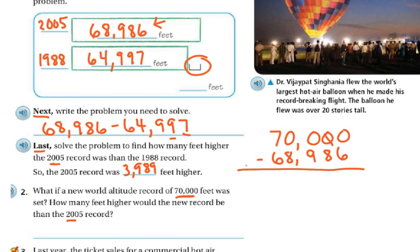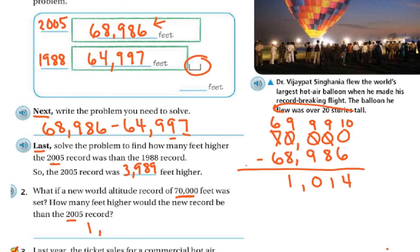I can't take 0 from 6, so I need to go next door. There's nothing to regroup there, or there, so I have to go all the way over and take a 10,000. That knocks all the intermediate places down to 9, and this last one becomes a 10. So 10 minus 6 is 4, 9 minus 8 is 1, 9 minus 9 is 0, 9 minus 8 is 1, and 6 minus 6 is nothing. The new record would be 1,014 feet higher than the 2005 record.